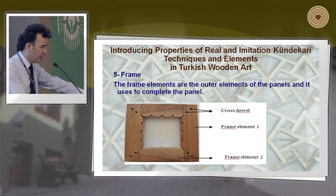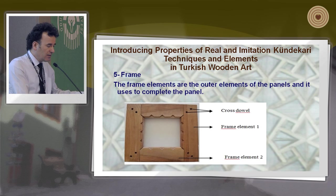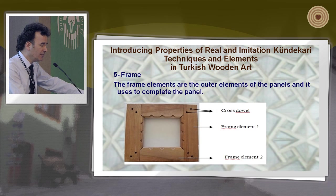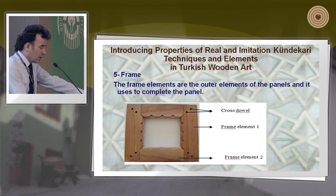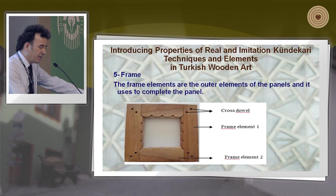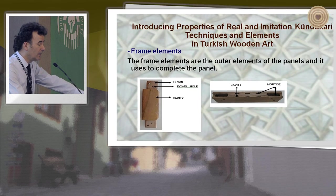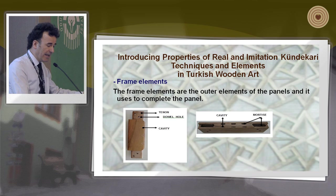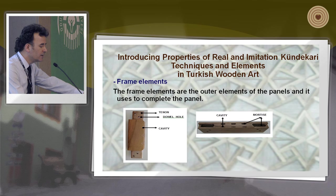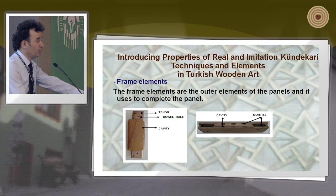The last element is the frame. The frame elements are the outer elements of panels and are used to complete the panel. It has a cross-joint. Frame element one has a tenon on both sides, a double hole, and a cavity. Frame element two has more ties on both sides and a cavity, and this area uses more ties to construct.